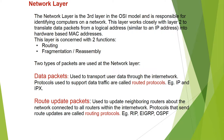Data packets are used to transmit user data through the inter-network; protocols used to support data traffic are called routed protocols, for example IP and IPX. Route update packets are used to update neighboring routers about the networks connected to all routers within the inter-network. Protocols that send route updates are called routing protocols.